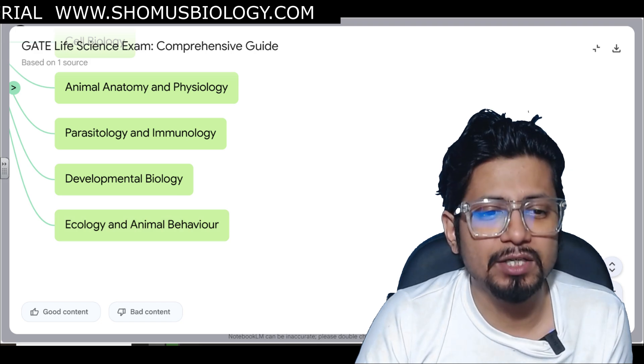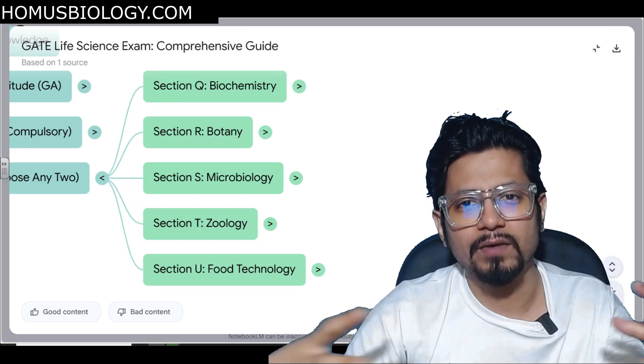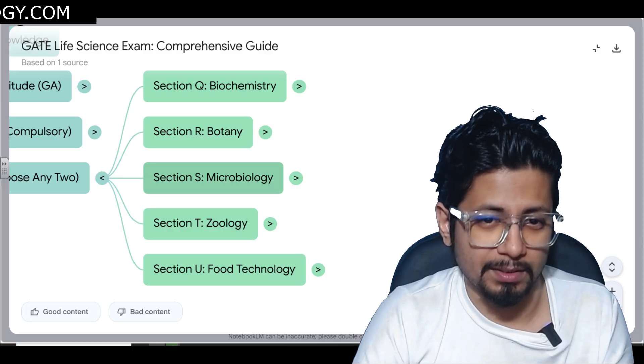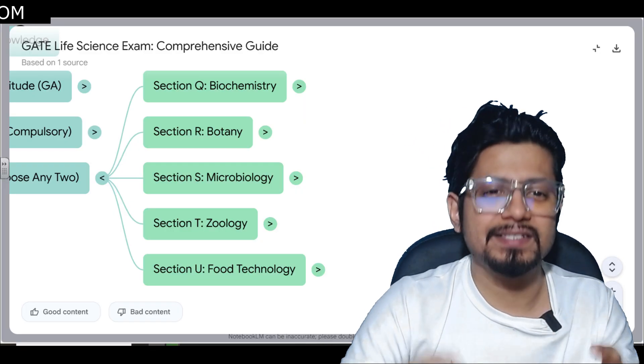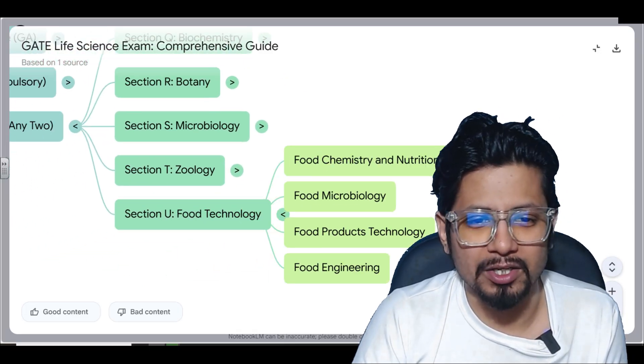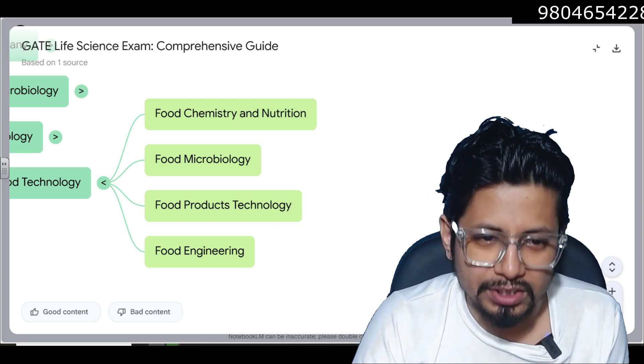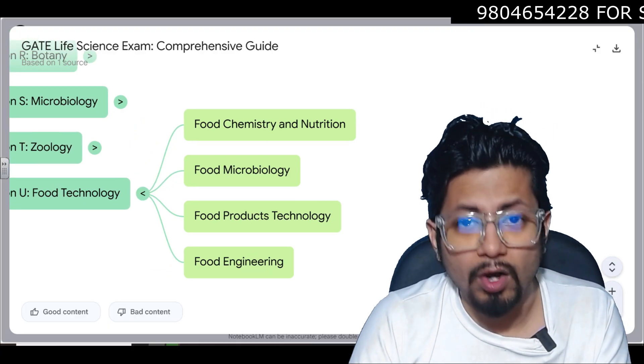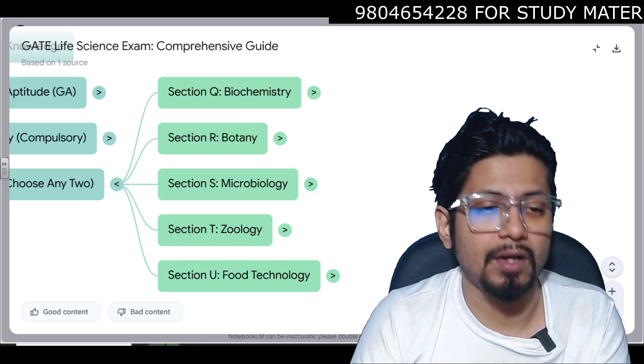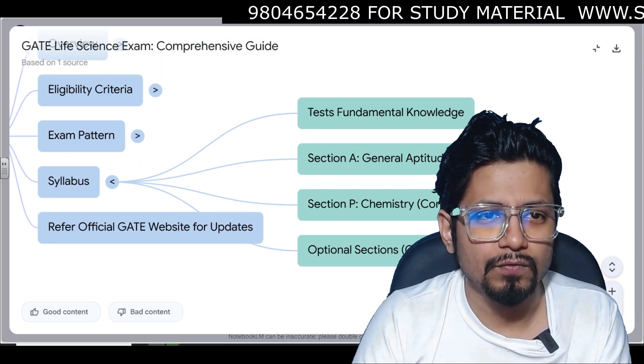If you compare the syllabus you'll realize if you select Zoology, the number of subjects that you need to study is huge. So it's better to choose Biochemistry and Microbiology. If you ask me, I'd choose Biochemistry and Microbiology because whatever is there in Biochemistry and Microbiology, Zoology covers them all plus some additional syllabus. Last is Food Technology. In Food Technology you can go with food chemistry and nutrition, food microbiology, food products technology and food engineering process. If you're from Biotechnology or Food and Nutrition, definitely select Food Technology and along with that you can select Microbiology or Biochemistry as a better combination for your selection of subjects.